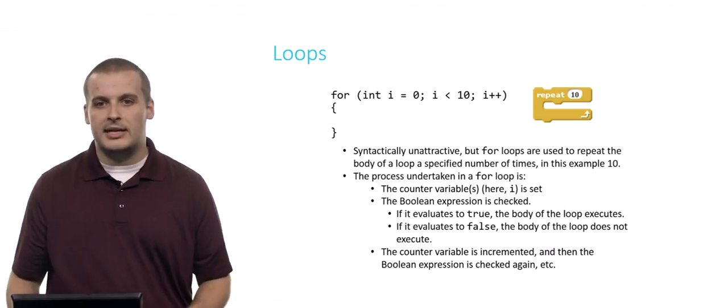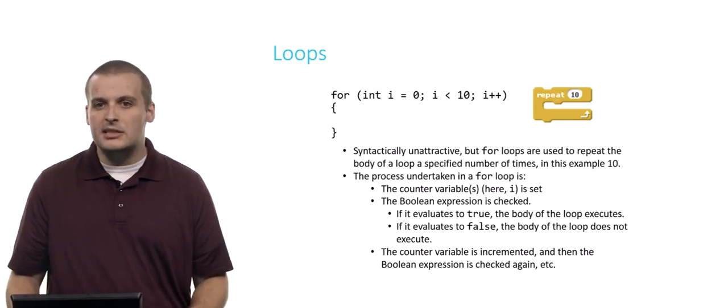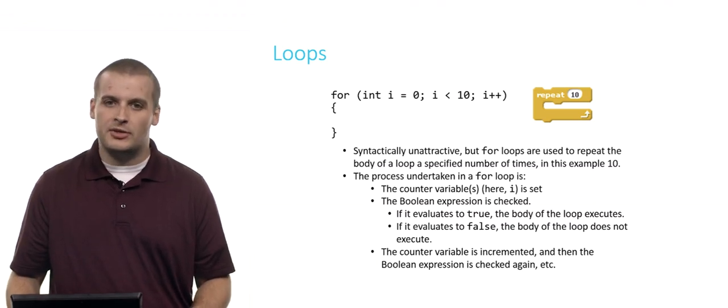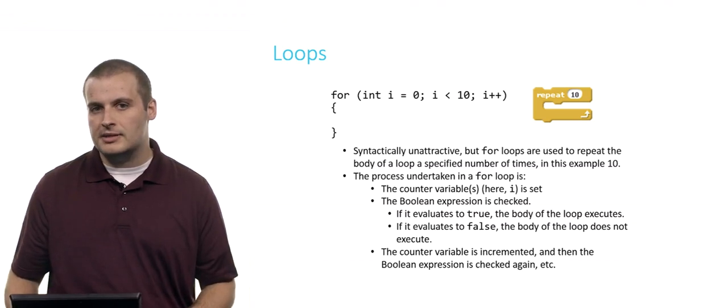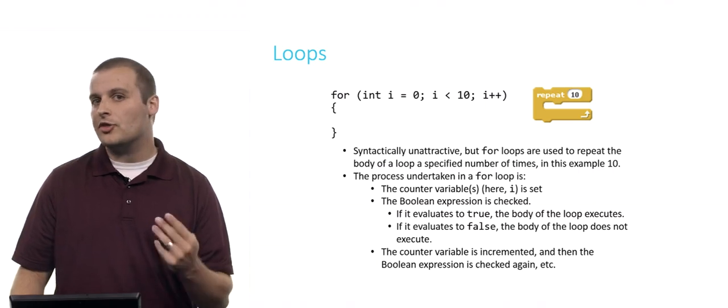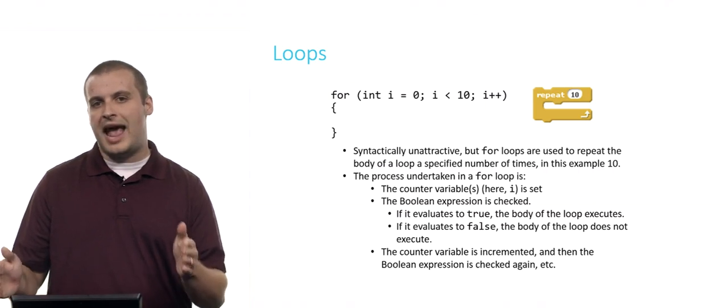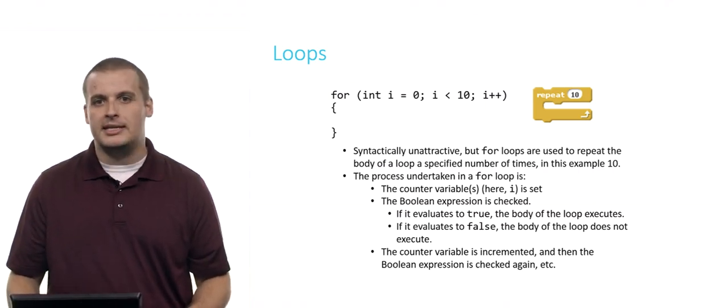If it was false, if for example I had said instead of i equals zero there, I had said i equals 15, int i equals 15. Well, 15 is not less than 10, so we would never enter the body of the loop, because the Boolean expression there would evaluate to be false. After we go through from top to bottom and we encounter that closing curly brace, a third thing happens. The counter variable is incremented, or rather the lines of code or the statements after the second semicolon inside of the for loop's parentheses is executed.